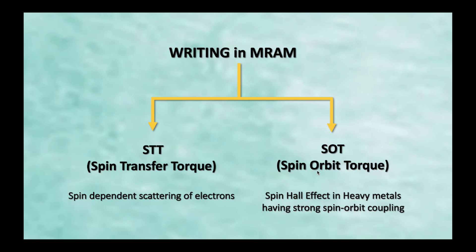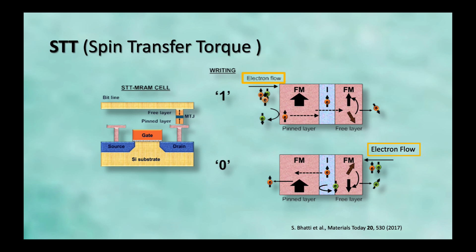STT effect utilizes the spin dependent scattering of electrons to transfer the momentum and to change the magnetization state of the ferromagnet. And, SOT utilizes the spin Hall effect in the heavy metal with a strong spin orbit coupling. So, let's go into details. So, this is the working of STT MRAM. The picture on the left hand side is the complete picture of an MRAM device. And, this is the main heart of our MRAM, which is also known as MTJ or magnetic tunnel junction. So, if we use STT technique to write, we pass the current through the magnetic tunnel junction.